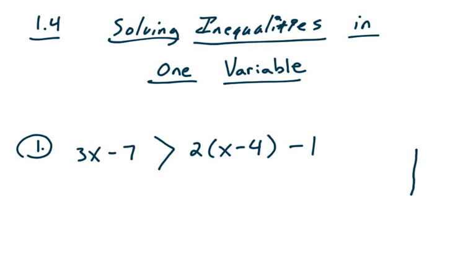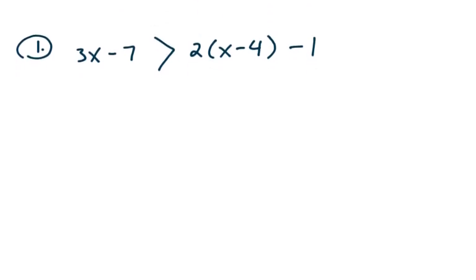When you see an inequality like 3x minus 7 is greater than 2 times the quantity x minus 4, minus 1, the way you approach this is the same way you approach a regular equation. Like I said before in section 1.1, you can simply distribute. If you see parentheses, go ahead and distribute.